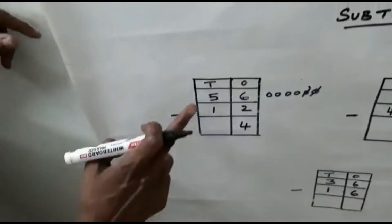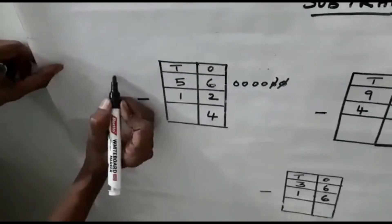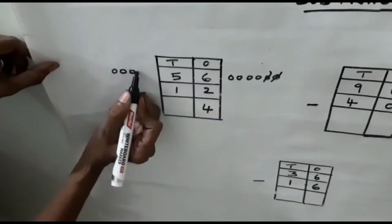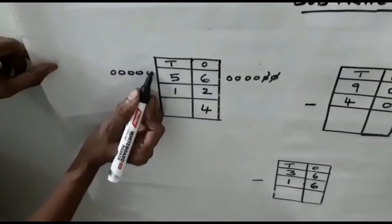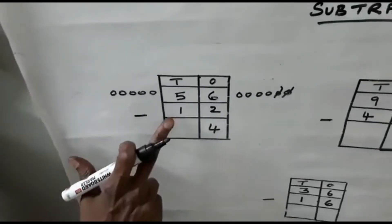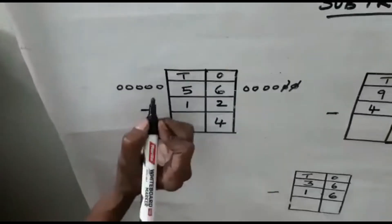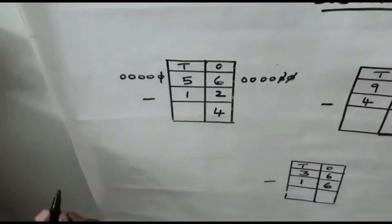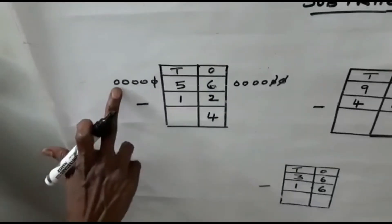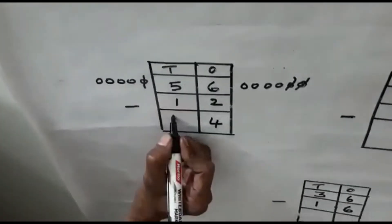Now we have the tens side: 5 minus 1. So 1, 2, 3, 4, 5. Now how many you must cancel? 1. Cancel 1. Now how many numbers are remaining? 1, 2, 3, 4. 4 is the answer.